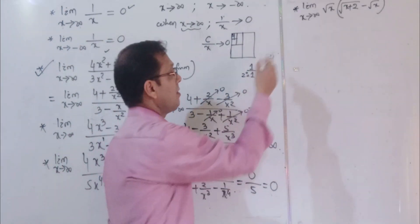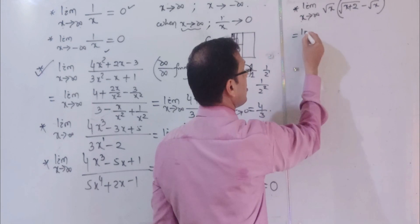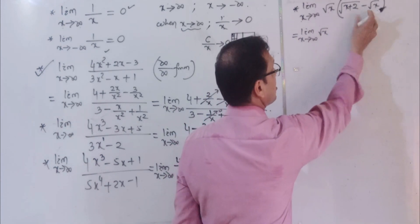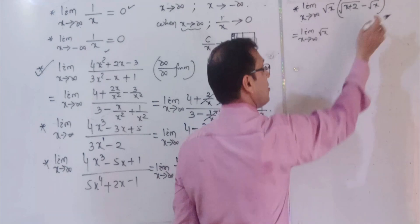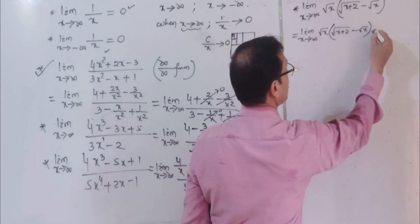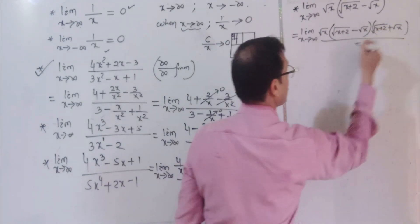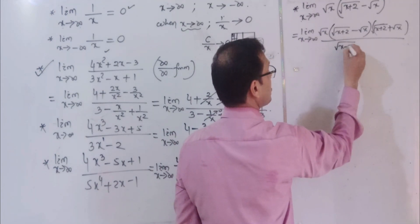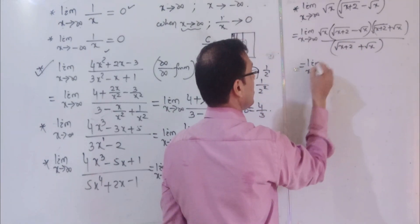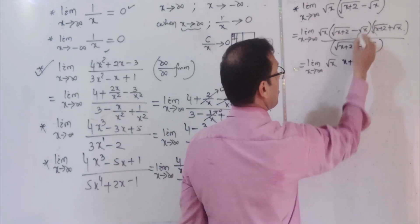Here is a good example: limit x tends to infinity of √x · (√(x+2) - √x). This has a rationalized numerator format. So, limit x tends to infinity of √(x+2) - √x. We multiply the numerator and denominator by the conjugate, which is √(x+2) + √x. Using the identity (a-b)(a+b) = a² - b², we get x+2 minus x in the numerator.